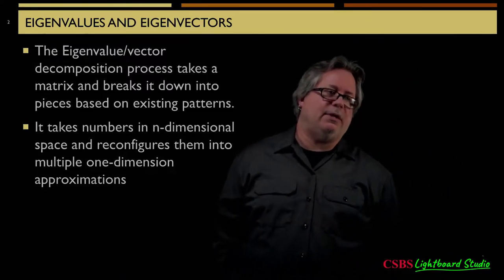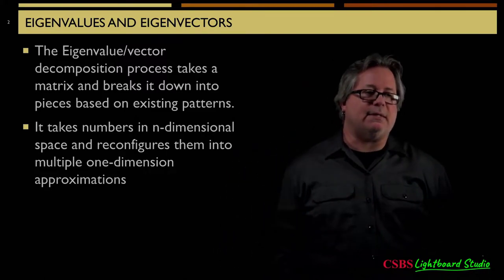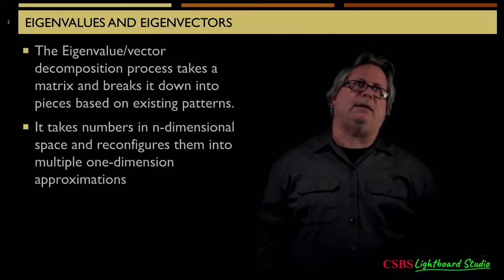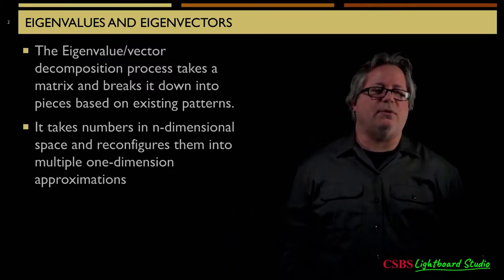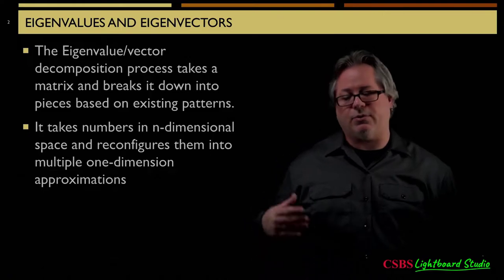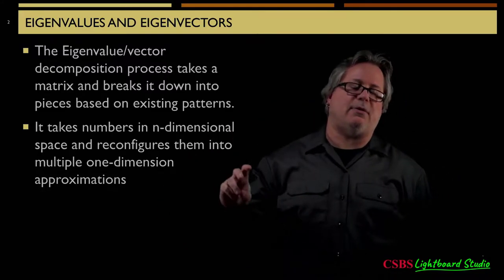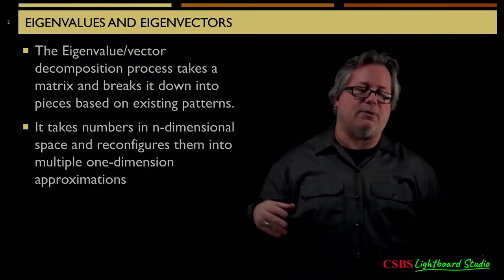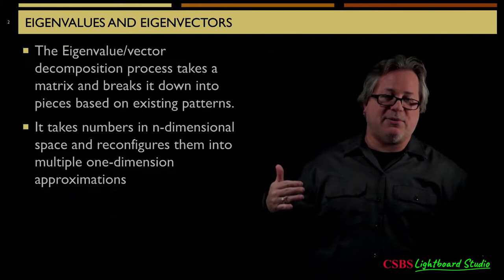The eigenvalue-eigenvector decomposition process takes a matrix — could be huge, massive amounts of data — and tries to break it down into pieces based on patterns it can identify. Mathematically it's complicated, but conceptually it's like running a bunch of regressions simultaneously. It's trying to find not just one pattern but multiple different kinds of patterns all at the same time, while trying to reduce the sheer dimensions of a matrix that can be really large — like a 100 by 100 matrix — reconfiguring it into smaller chunks of information.